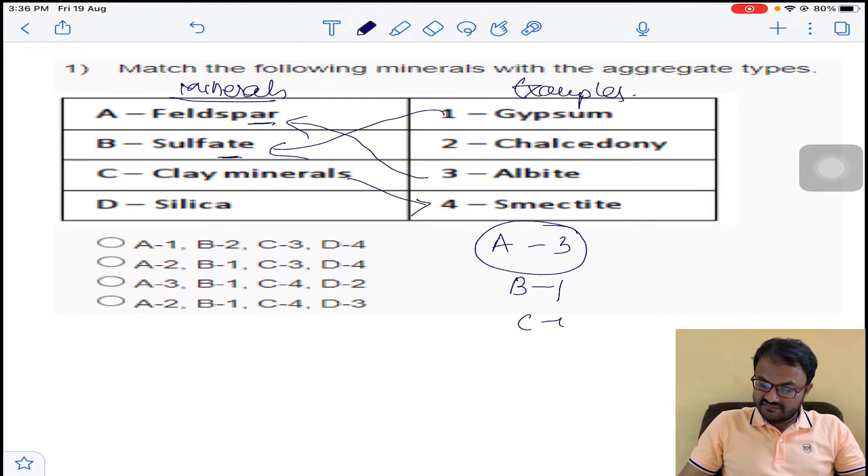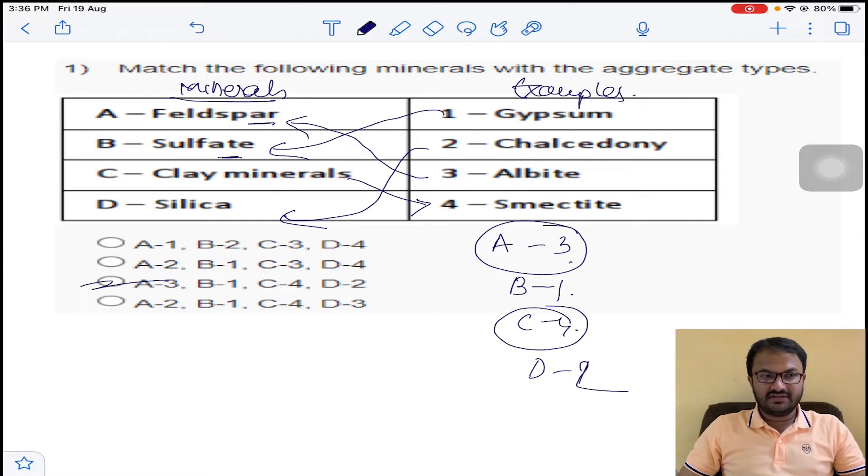From silica you will get chalcedony. So it is B1, 3142. So option C for question number 1. This is complete theory; I am not teaching much, just giving you answers.